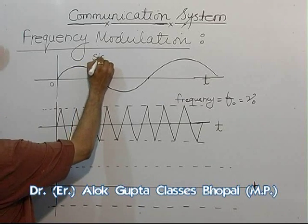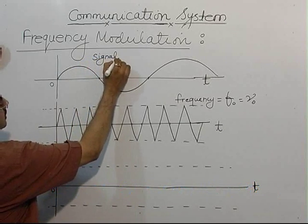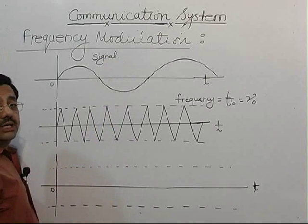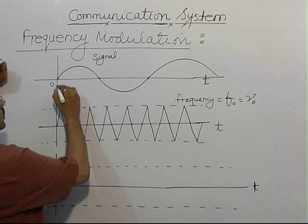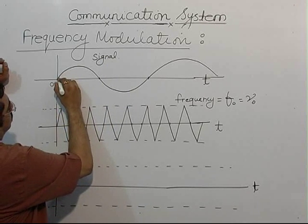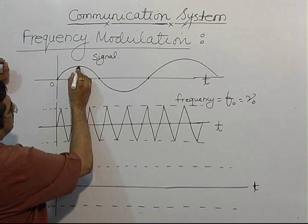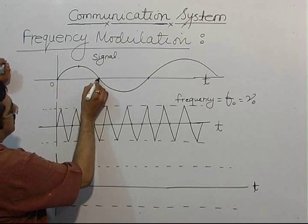The signal is an electrical signal — it may be voice, it may be a video signal, or anything. Now when the positive cycle comes, voltage increases to its maximum, then decreases back to zero.